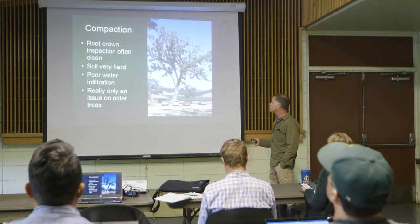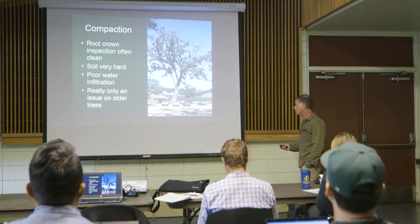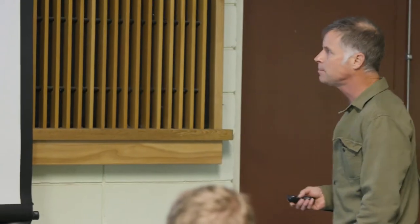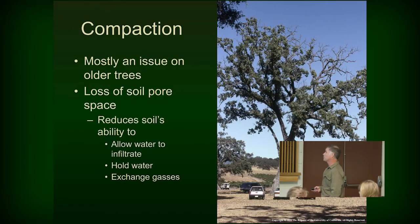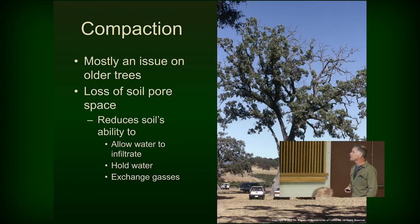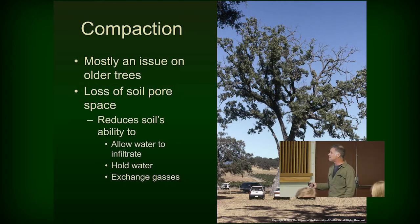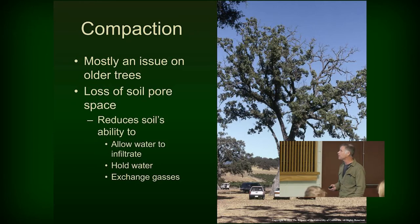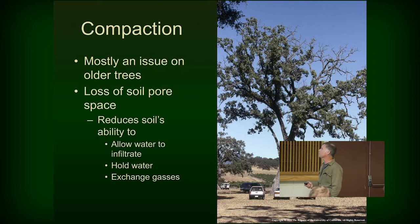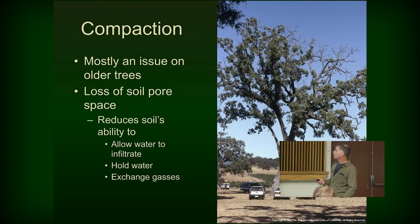Compaction can be subtle — it's really obvious when you've got cars parked under the tree, but you may not even know people are parking cars on this site when you're asked to figure out what's going on. The soil is going to be very hard and water won't move through what's effectively concrete. This isn't a problem for annuals — they just won't want to grow in something this hard. But nobody's calling you out to figure out the problem with weeds. They're calling because of valuable landscape trees.